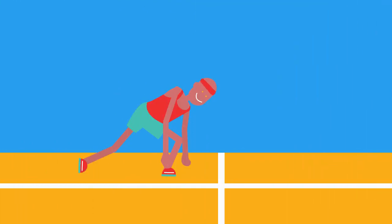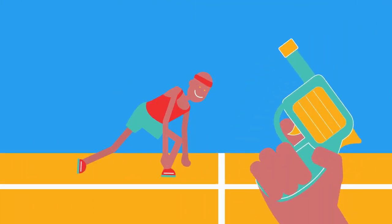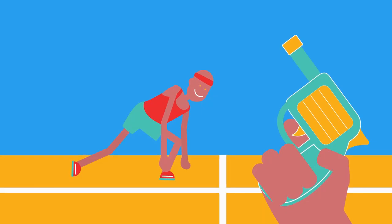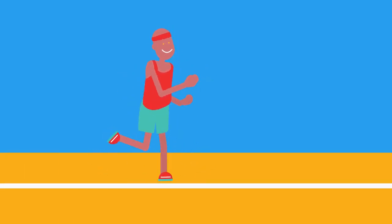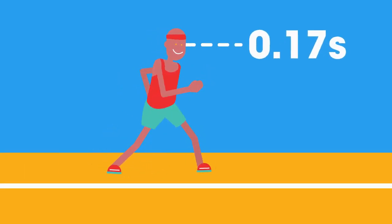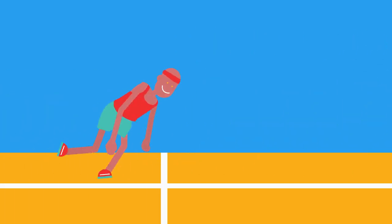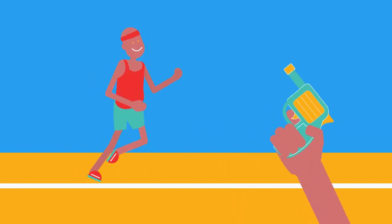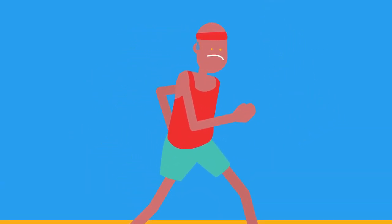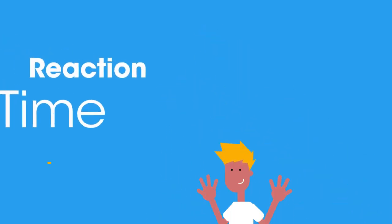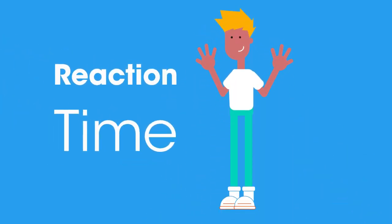How do we know that an athlete has had a false start? For a fair start, the runner mustn't begin to move until they have heard and responded to the starting pistol. In a human, this response time is about 0.17 seconds. So if they begin to move in less than that time after hearing the sound of the pistol, they have jumped the gun and are guilty of a false start.